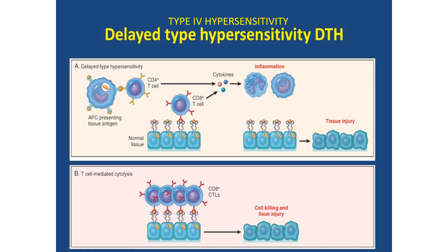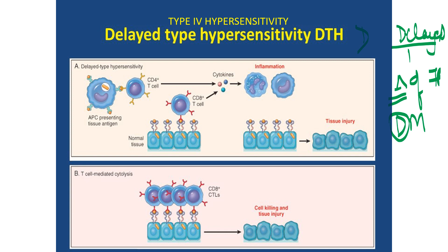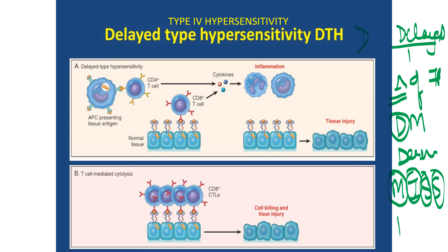Delayed type — type 4 — if you remember, D is for diagnosis of TB using the tuberculin skin test. Type 1 diabetes mellitus, contact dermatitis, and if you are delayed you often miss things — multiple sclerosis. S for skin test or TB diagnosis, and S — though the spelling is different — you can remember psoriasis. So with these mnemonics, you can now easily remember all the examples.